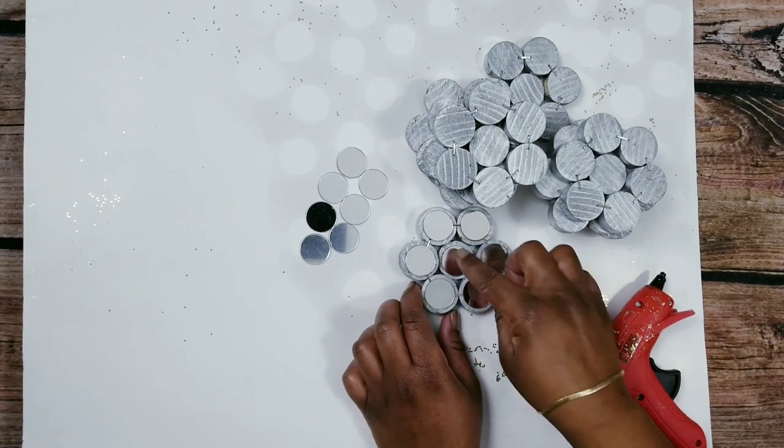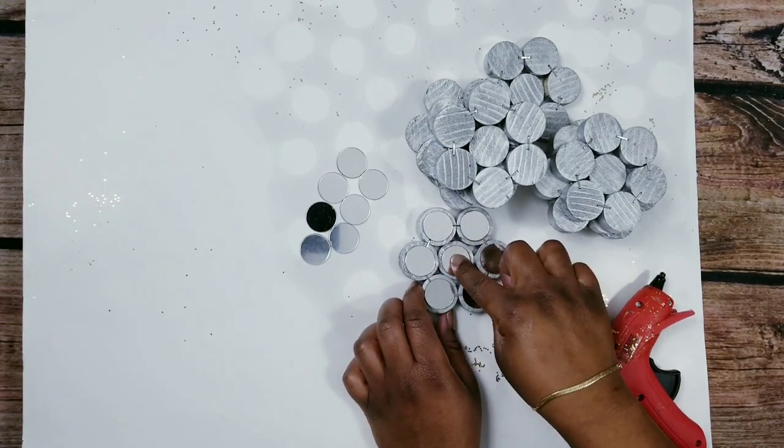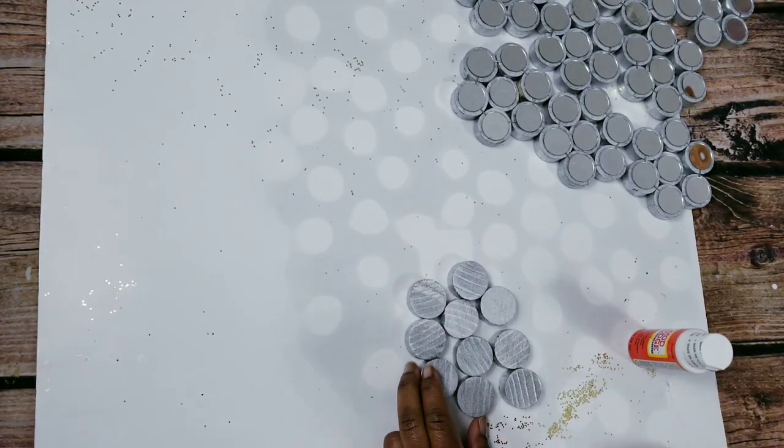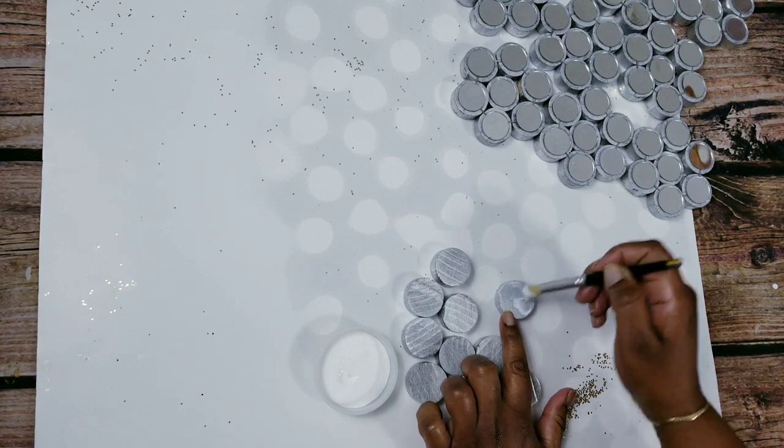And I made 10 pieces of these. So we're going to be left with 10 half inch pieces. And I'm going to be using my Mod Podge to go over the top of it. And then I'll add my glitter.